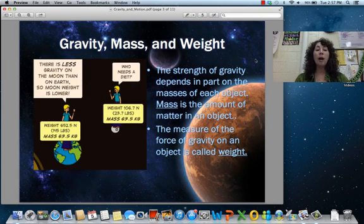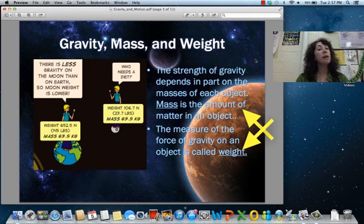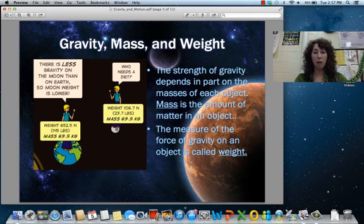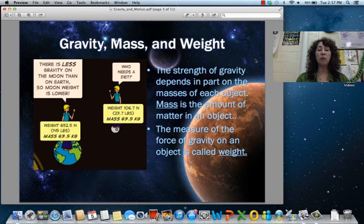Okay so the strength of gravity depends on the mass of the objects. Let's not forget of course what mass is, which is just the amount of matter in an object. That is different from weight. Mass is what you're made up of, weight is that measure of the force of gravity on an object. So of course our mass will stay the same no matter where we are. Our weight would change if we went somewhere where there was less gravity like the moon.